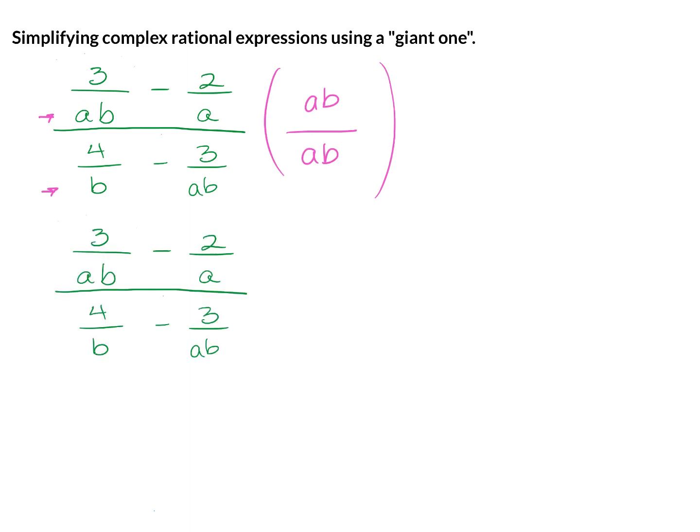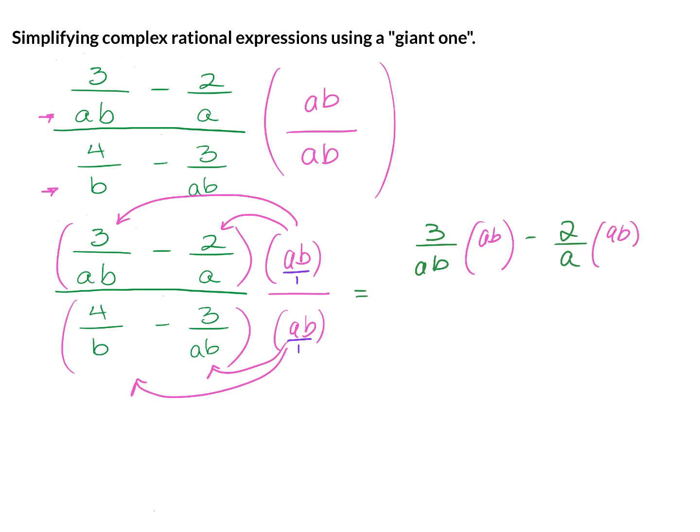Now we are going to distribute the AB to the numerator and the denominator. It may help if you think of this as AB over 1 and AB over 1. You don't have to, but that's something that may make it a little easier when you're distributing. You're going to distribute AB to 3 over AB as well as negative 2 over A. And in the denominator, you're going to do the same. I will write this out for you. So first you have 3 over AB multiplied by AB minus 2 over A multiplied by AB. And that is divided by 4 over B multiplied by AB minus 3 over AB also multiplied by AB.